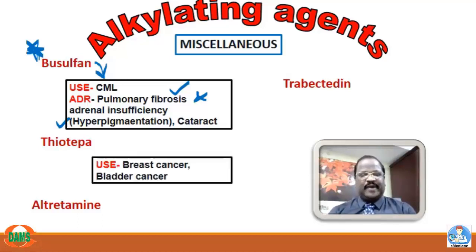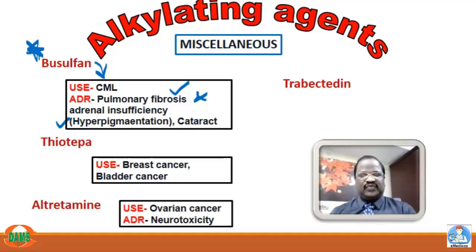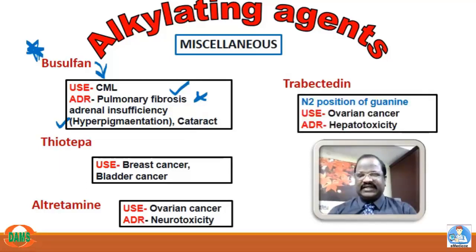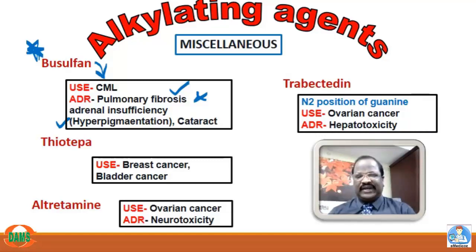Thiotepa is useful for breast cancer and bladder cancer. Altretamine is useful for ovarian cancer with an important adverse effect of neurotoxicity. Trabectedine acts on the N2 position of guanine residue (most alkylating agents act on the N7 position), is useful for ovarian cancer, and causes hepatotoxicity.